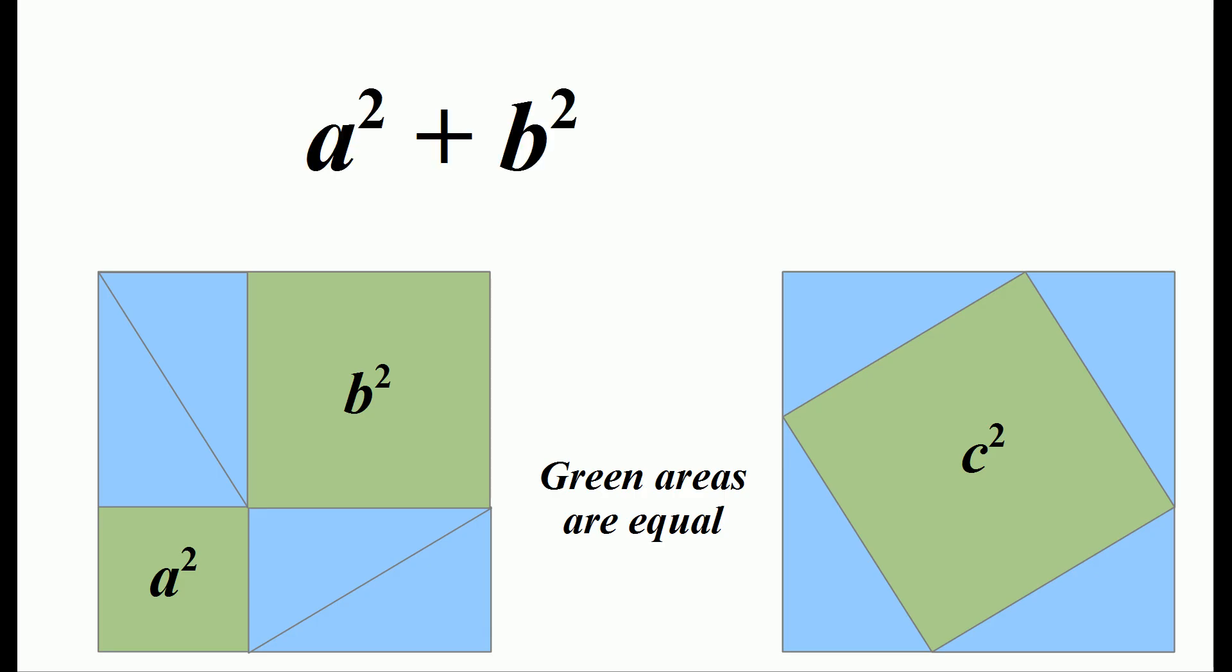And so what we have is A squared plus B squared on the left, and C squared on the right. And therefore, A squared plus B squared equals C squared.